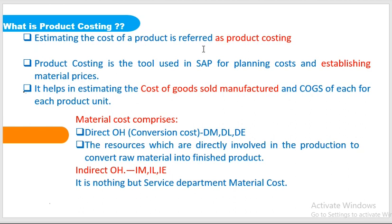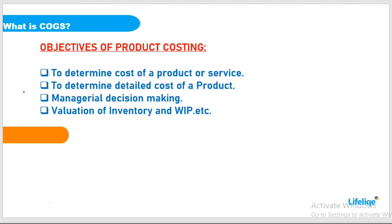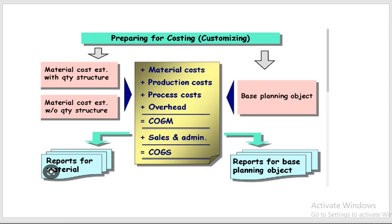This product costing is definitely helpful to calculate COGS — COGS means cost of goods sold — and cost of goods sold manufactured. The objectives of product costing include determining the cost of a product or service. To calculate COGS, we take material cost, add product cost and process cost, then overhead, to get COGM — cost of goods manufactured. Once you add sales and administration costs to COGM, you get COGS.